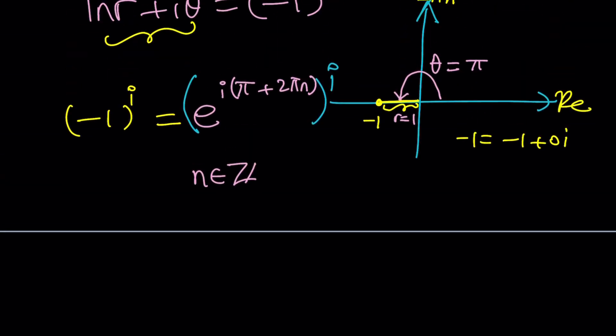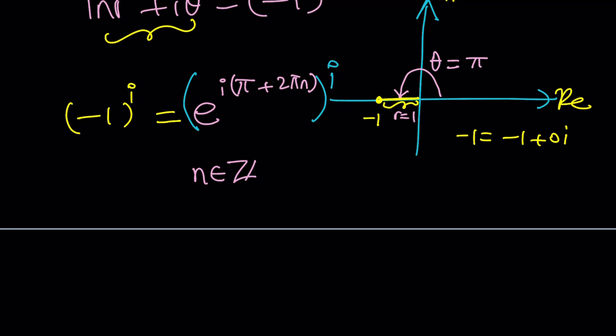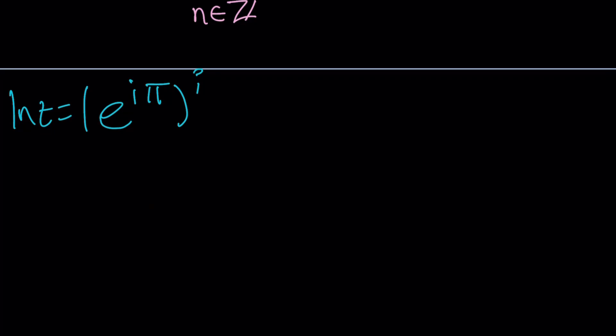So I'm going to go ahead and write this as i pi to keep it simple. This is equal to ln z. So now ln z becomes e to the power i squared pi, but i squared is negative one. So it's going to be e to the power negative pi. And now we're going to do e to the power both sides. So z is going to be e to the power e to the power negative pi.